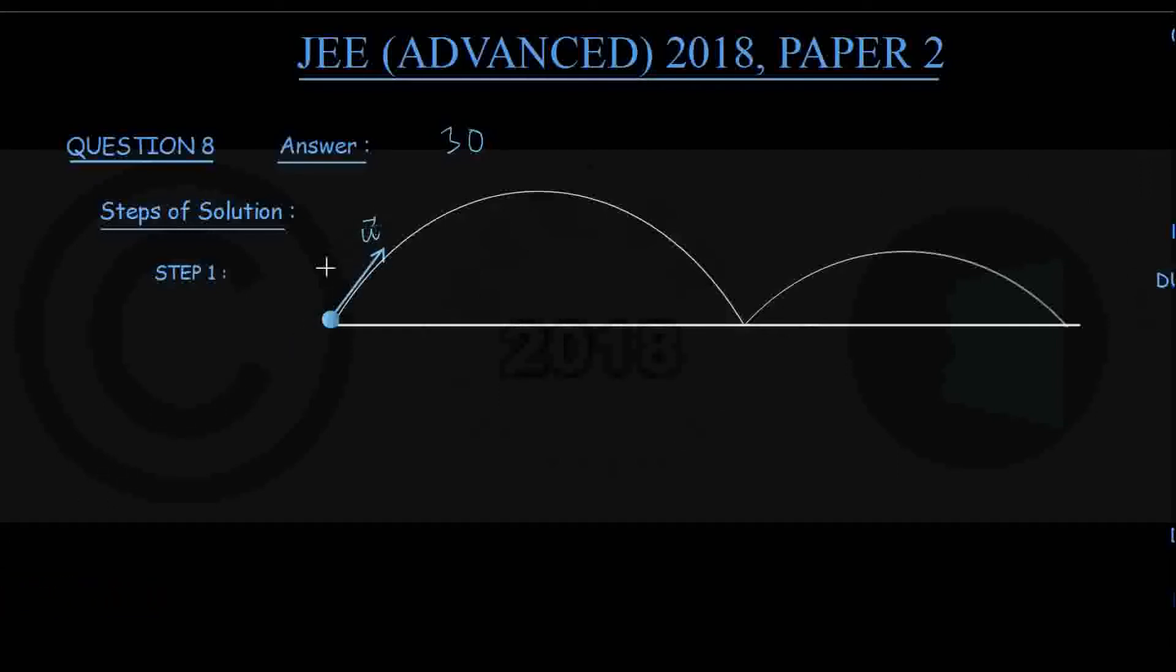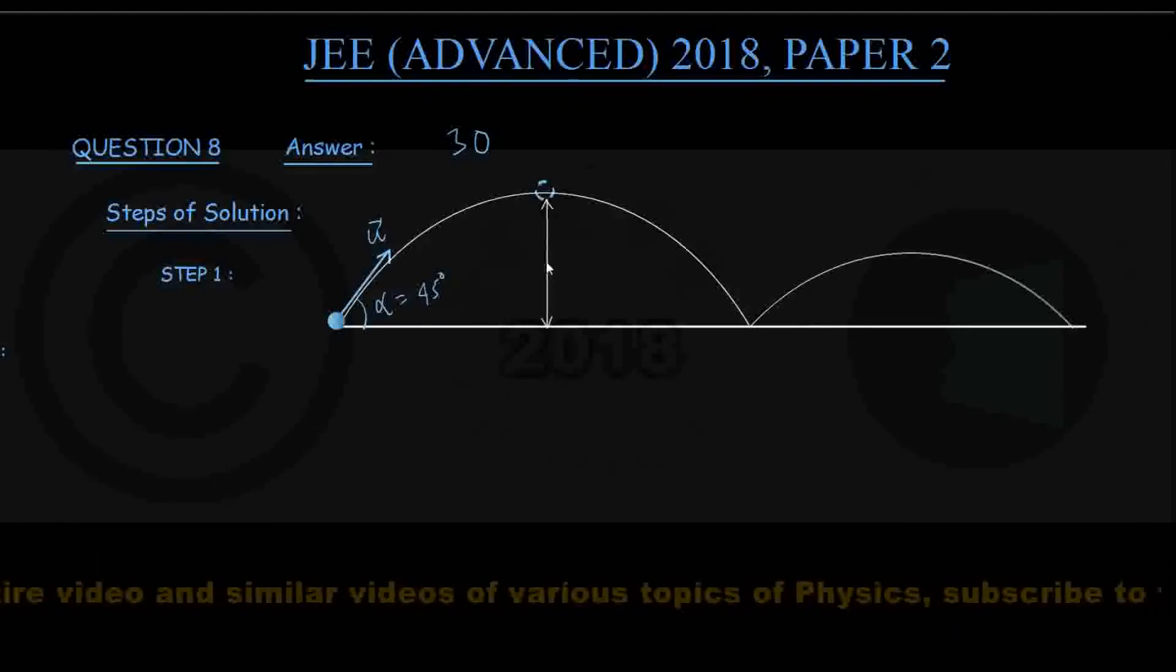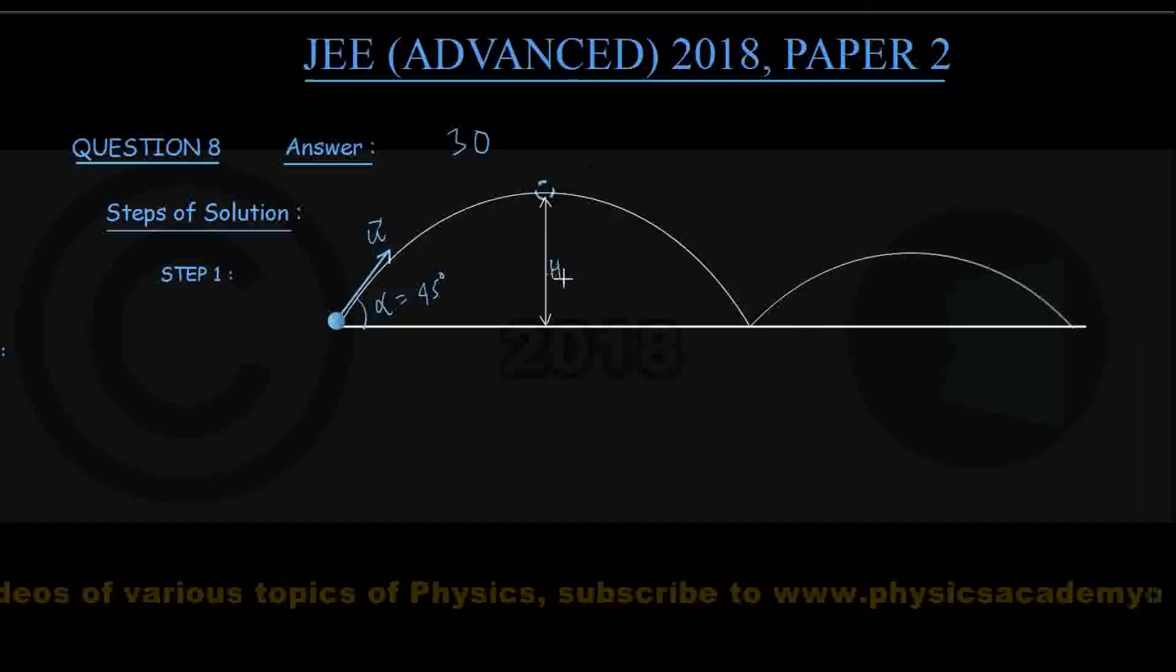Suppose it is launched from this point with an initial velocity of u. This velocity is u and the angle of projection that I take to be alpha is given in the problem to be 45 degrees. It reaches the highest point here and the corresponding maximum height that we take to be H1. This H1 is known to be 120 meters.